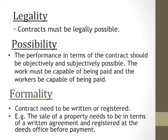Possibility means the performance in terms of the contract should be objectively and subjectively possible. The work must be capable of being performed and the workers must be capable of being paid. Formality means a contract needs to be written or registered. For example, the sale of a property needs to be in terms of a written agreement and registered at the deeds office before payment. The formalities are in place to protect you as the individual entering into the contract, and also to protect the other party.